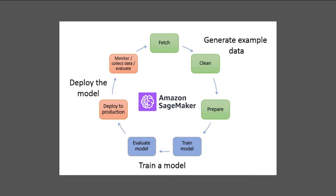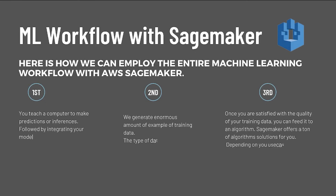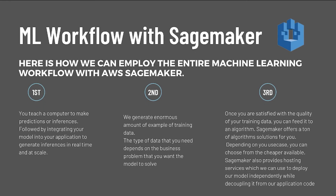Now, having learned these three concepts, let's look at how we can employ the entire machine learning workflow with AWS SageMaker. In machine learning, you teach a computer to make predictions or inferences on your behalf. First, you use an algorithm and example data to train a model. Then you integrate your model into your application to generate inferences in real time and at scale. In a production environment, a model typically runs on millions of example data items and produces inferences in hundreds to less than 20 milliseconds. For this first phase, we generate an enormous amount of example or training data.